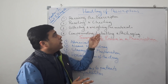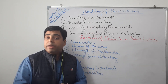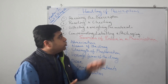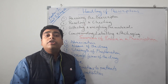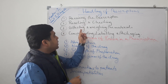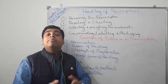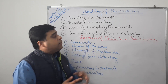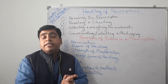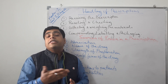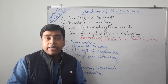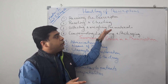These are the points a pharmacist must know about handling a prescription. First and foremost: receiving the prescription, then reading and checking it, then collecting and weighing the material, followed by compounding, labeling, and packaging. This is the full process of handling a prescription, applicable especially when medications were freshly prepared.